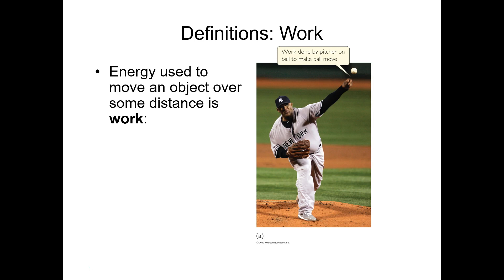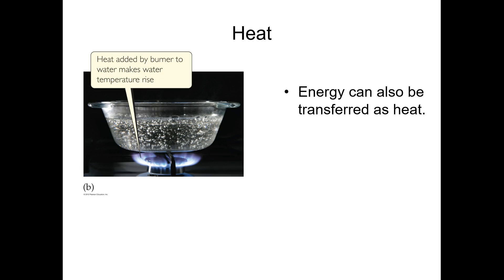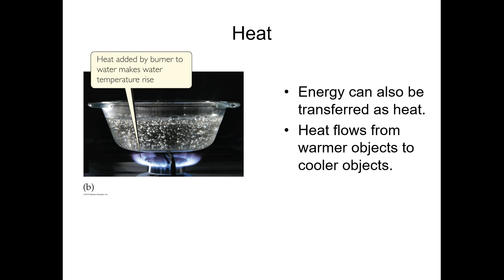Work is the energy used to move an object over a distance — it is force times distance — and the unit is the joule, since one newton-meter equals one joule. Heat is energy transferred from one object to change the temperature of another object. When we heat a pan using a flame, we cause the temperature of the water to rise until it boils. Heat flows from a warmer object to a colder one until they both reach the same temperature.